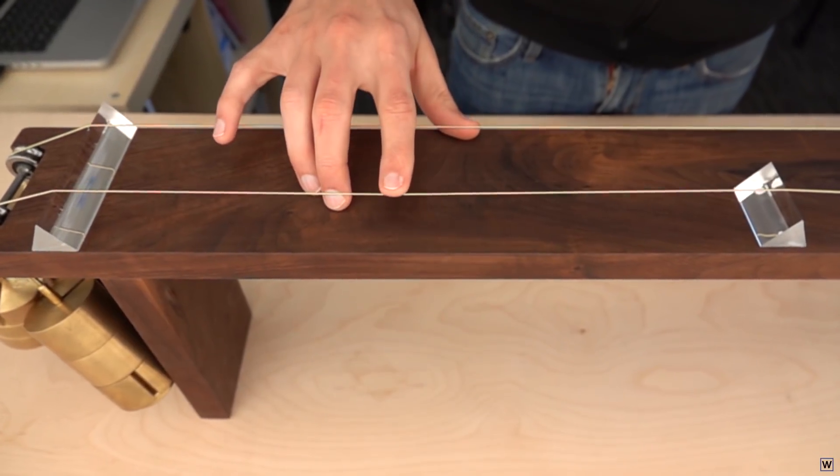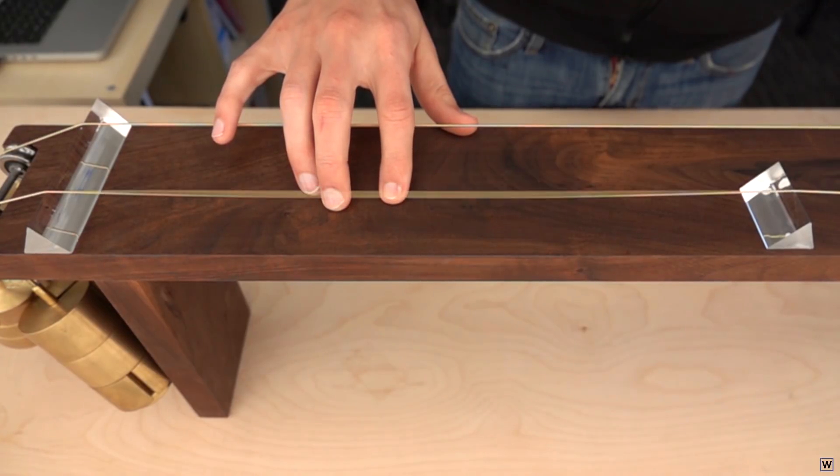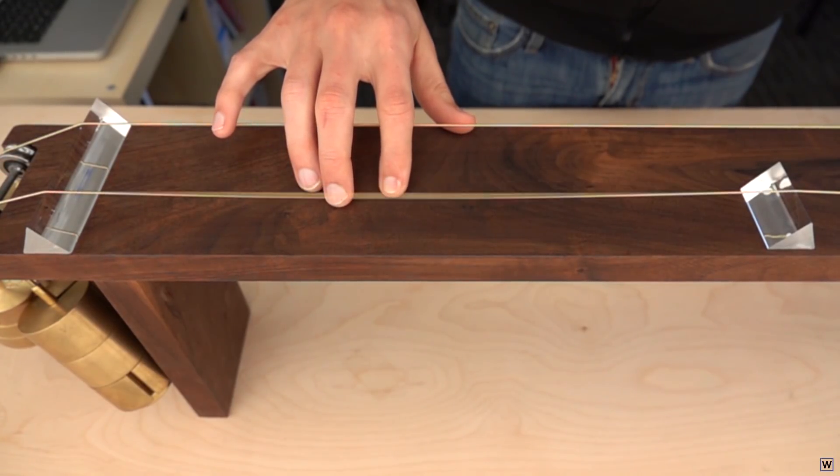Using our camera, we can slow down the motion of our strings, just as Mersenne did by making his string so long, allowing us to simply count the number of vibrations in a given time period.